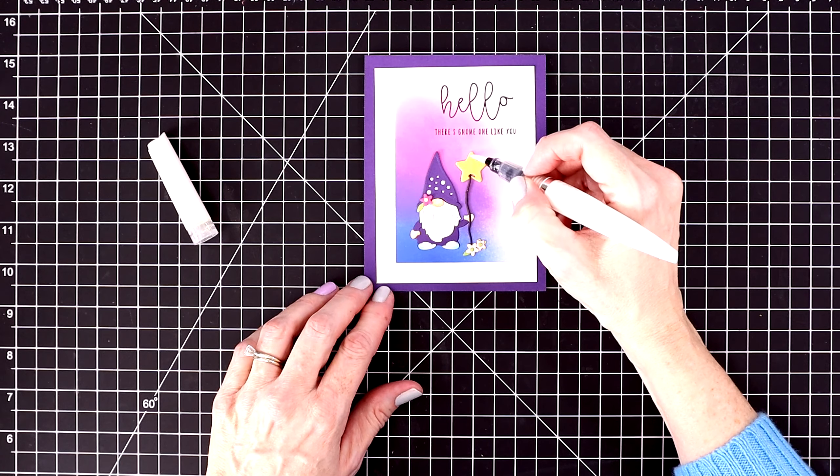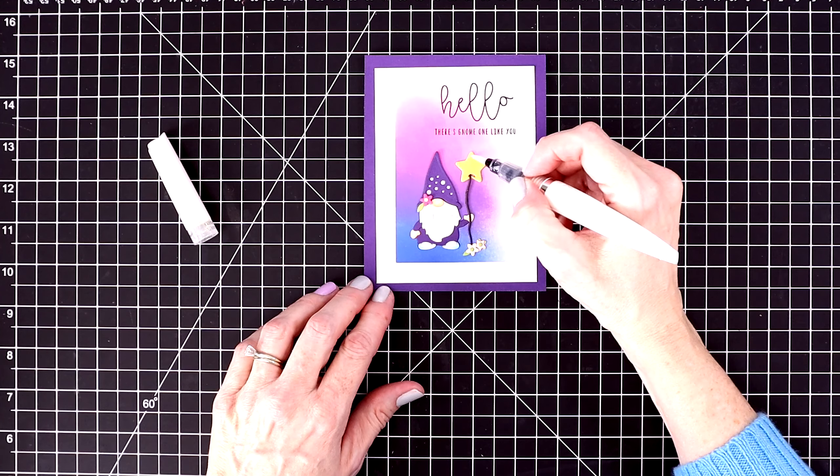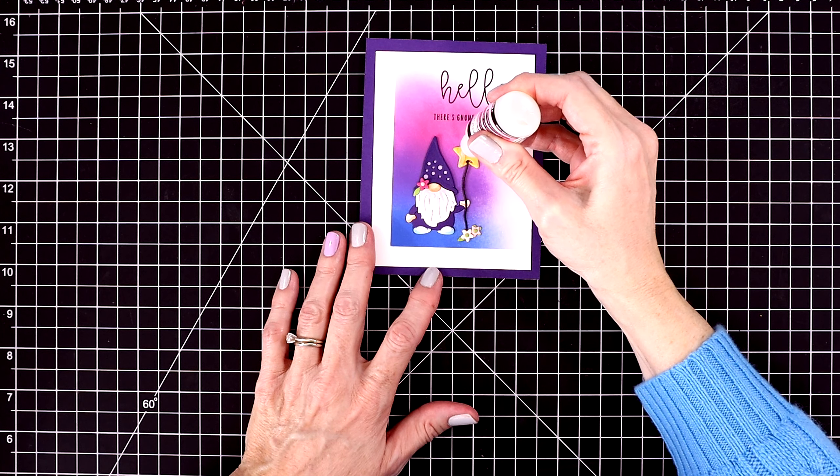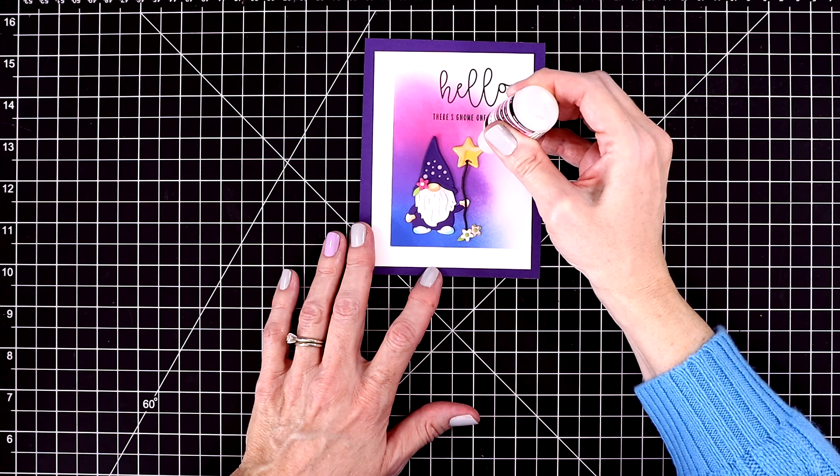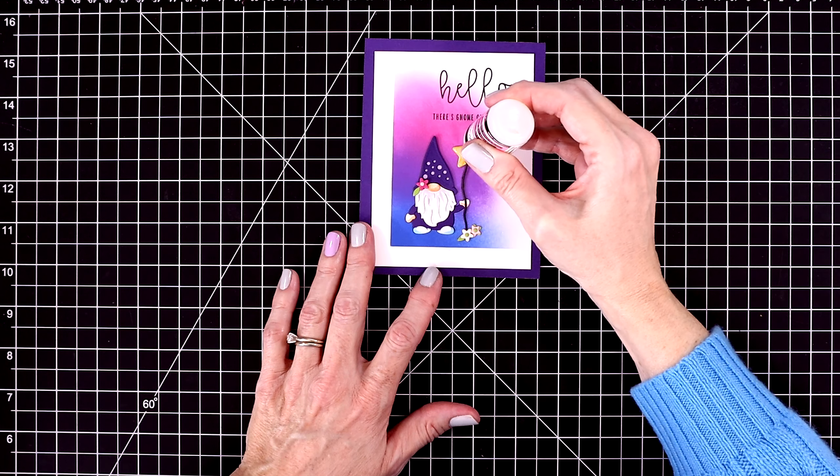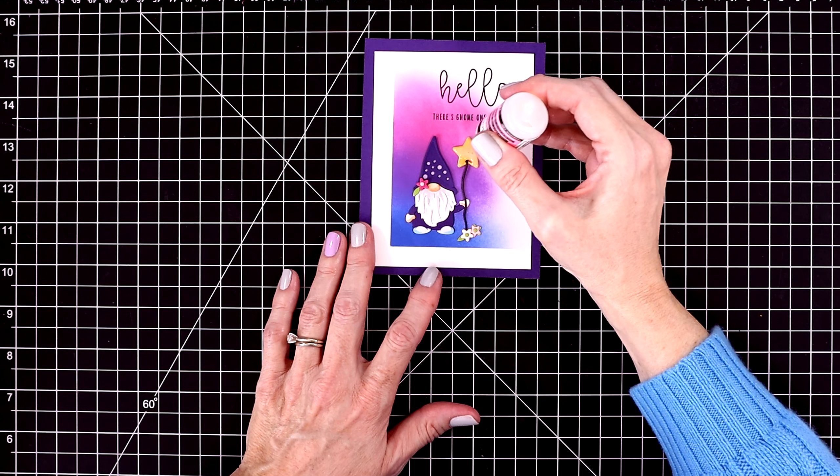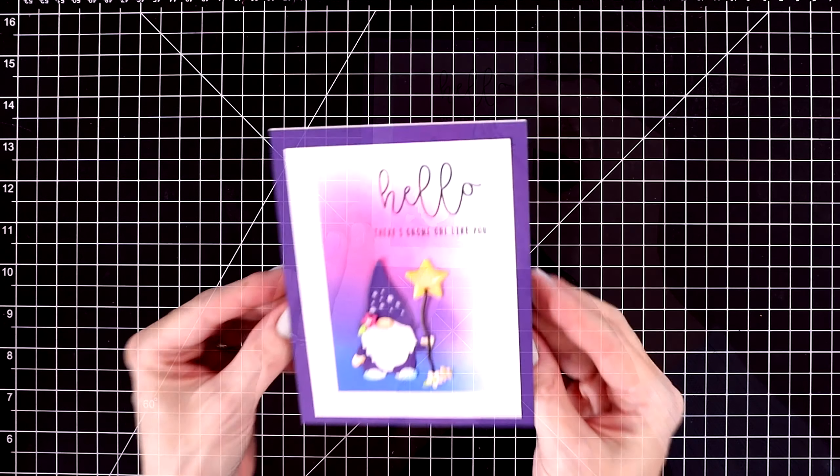And then next I'm going to add some clear glitter pen over the star. This will make it nice and sparkly. I allowed that to dry and now I'm adding some glossy accent over the whole star.